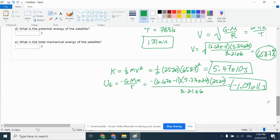Final question is what's the total energy. Total energy is the kinetic plus the potential. 5.47E10 minus 1.09E11. I got a negative 5.43E10 joules. This is the total energy.